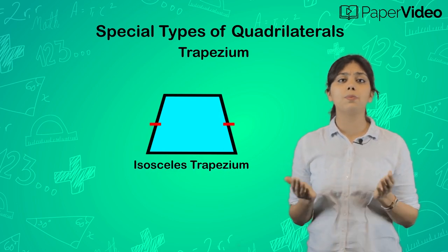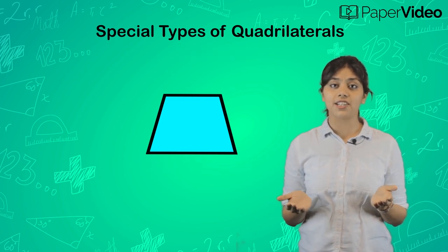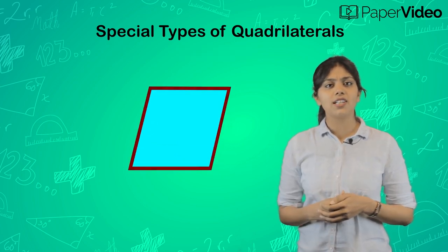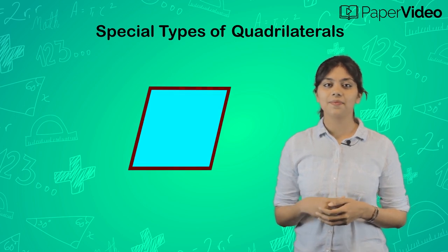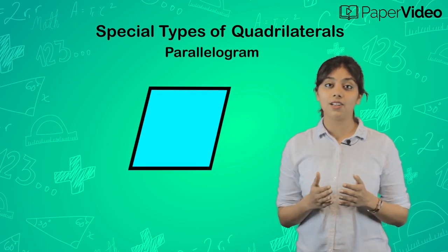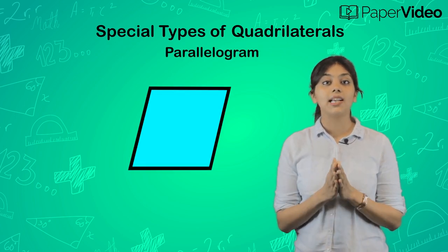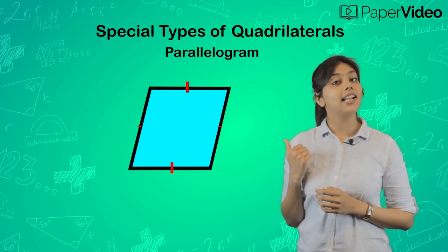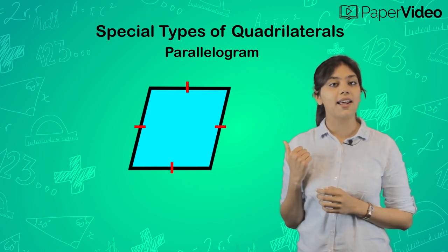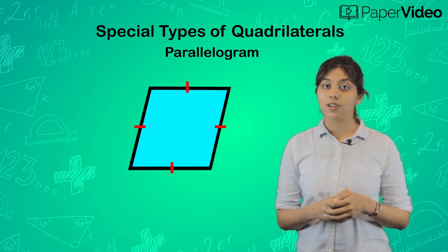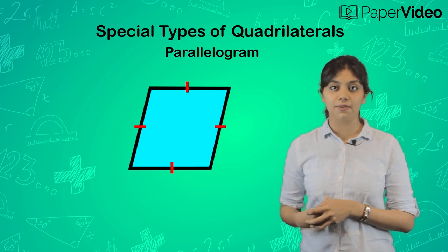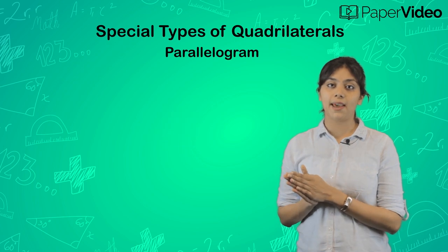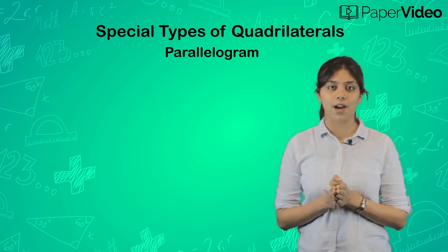Now suppose both pairs of opposite sides of a quadrilateral are parallel. Then what do we call such types of quadrilaterals? They are known as a parallelogram. In this parallelogram, these two sides are parallel to each other and these two sides are parallel as well. A parallelogram is a very special type of quadrilateral, and there are different types of parallelogram which we will discuss now.